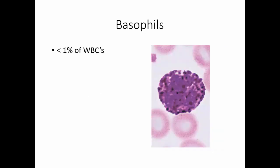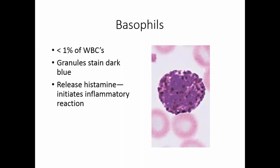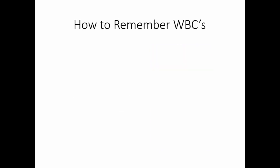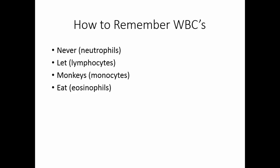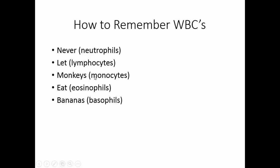Basophils make up less than 1% of the white blood cell population. Their granules stain a very dark blue, almost obscuring the nucleus. Their granules release histamine, which initiates an inflammatory reaction. Similar cells in the tissue called mast cells come from a different stem cell but have the same function. To remember the order of white blood cells from most to least common: never let monkeys eat bananas — neutrophils, lymphocytes, monocytes, eosinophils, basophils.